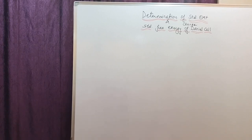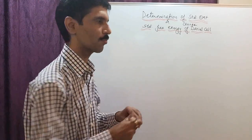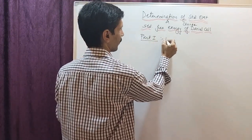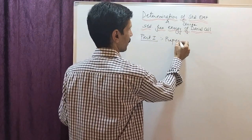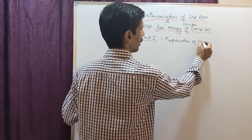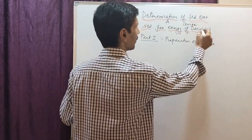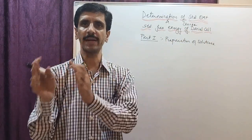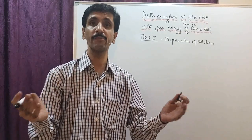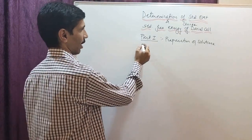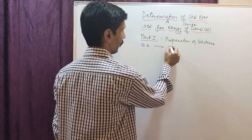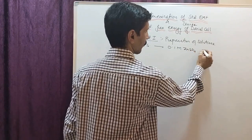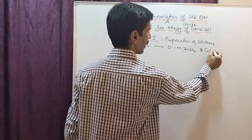Now I will be explaining the procedure of this particular experiment — it is made up of various parts. Part 1 is the preparation of solutions. The solutions I am talking about are zinc sulfate and copper sulfate, since the Daniel cell is made up of zinc and copper ions. The stock solutions are already being given to you: 0.1 molar zinc sulfate as well as 0.1 molar copper sulfate.